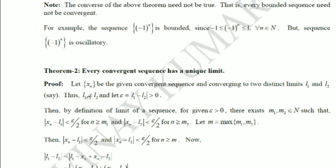When L1 ≠ L2, their difference cannot be 0, so |L1 − L2| > 0. Let us choose epsilon equal to |L1 − L2|. By the definition of limit of a sequence, for this epsilon greater than 0, there exist positive integers M1 and M2 such that |xn − L1| < epsilon/2 for n ≥ M1, and |xn − L2| < epsilon/2 for n ≥ M2.